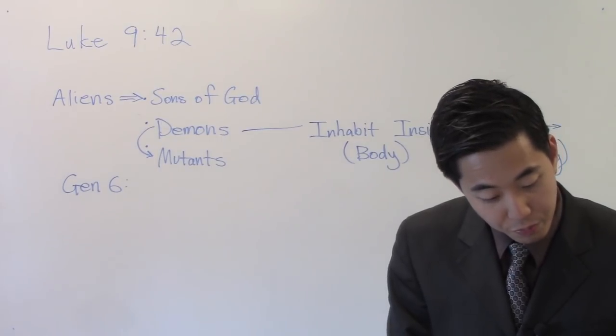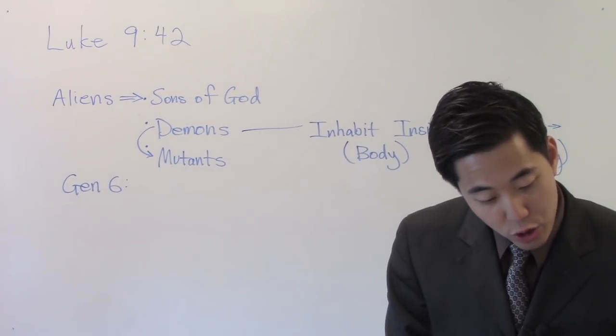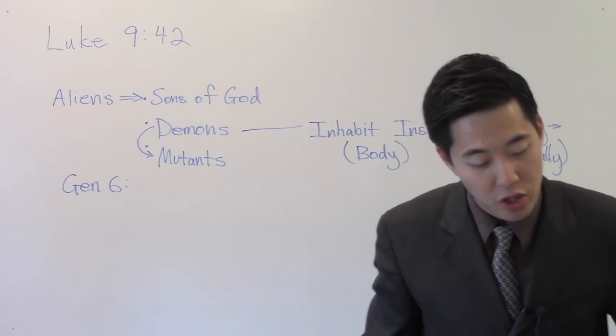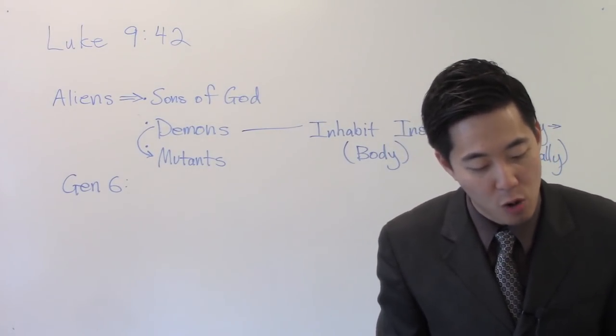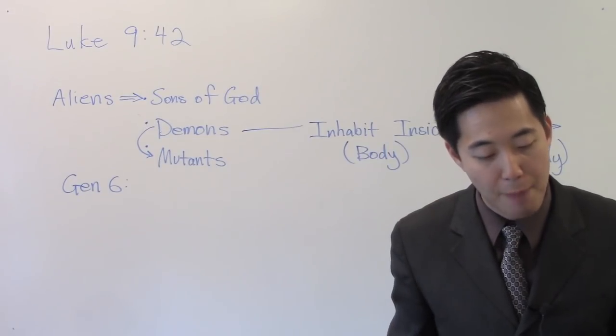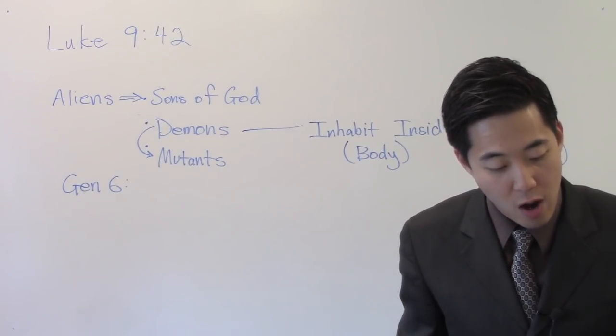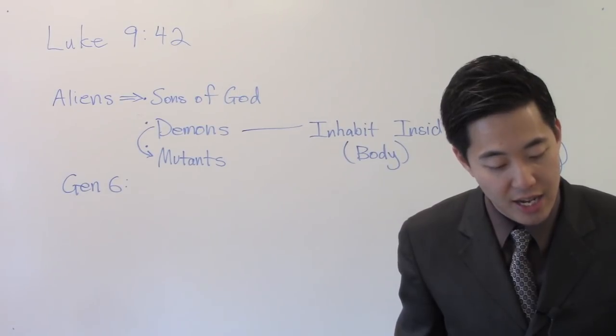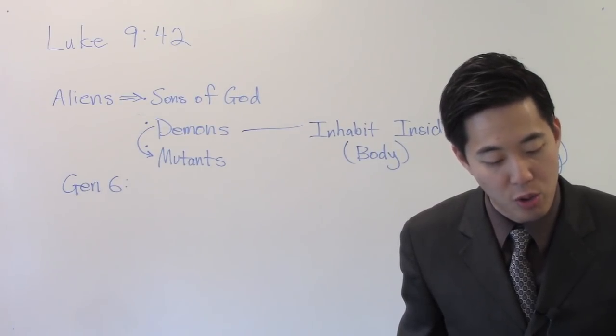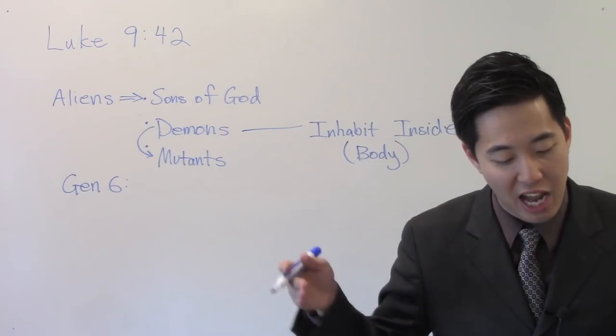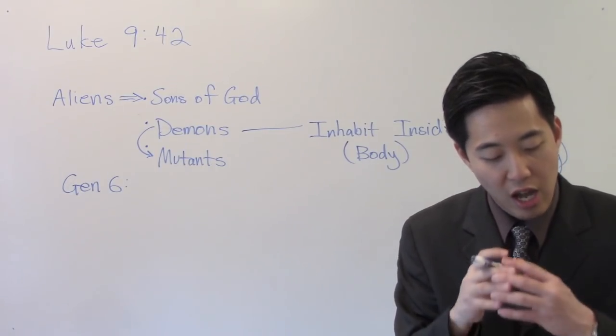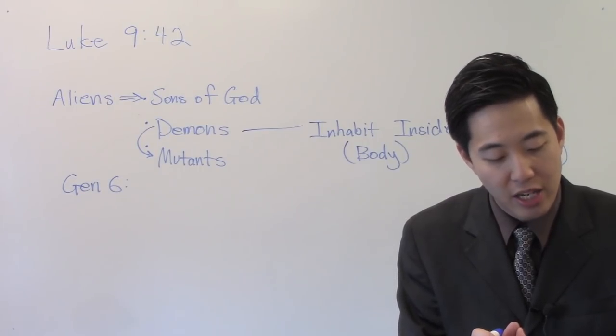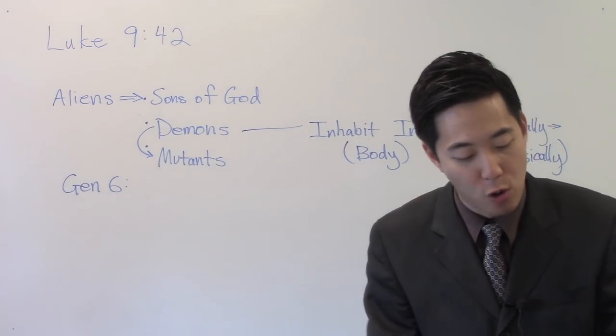The devils mingled with humans, and they gave birth to such mutants. Genesis chapter 6. We will read verse 2. That the sons of God saw the daughters of men, that they were fair, and they took them wives of all which they chose. Now look what happened through this intermingling. Verse 4. There were giants in the earth in those days. And also after that, when the sons of God came in unto the daughters of men, and they bare children to them, the same became mighty men which were of old, men of renown.